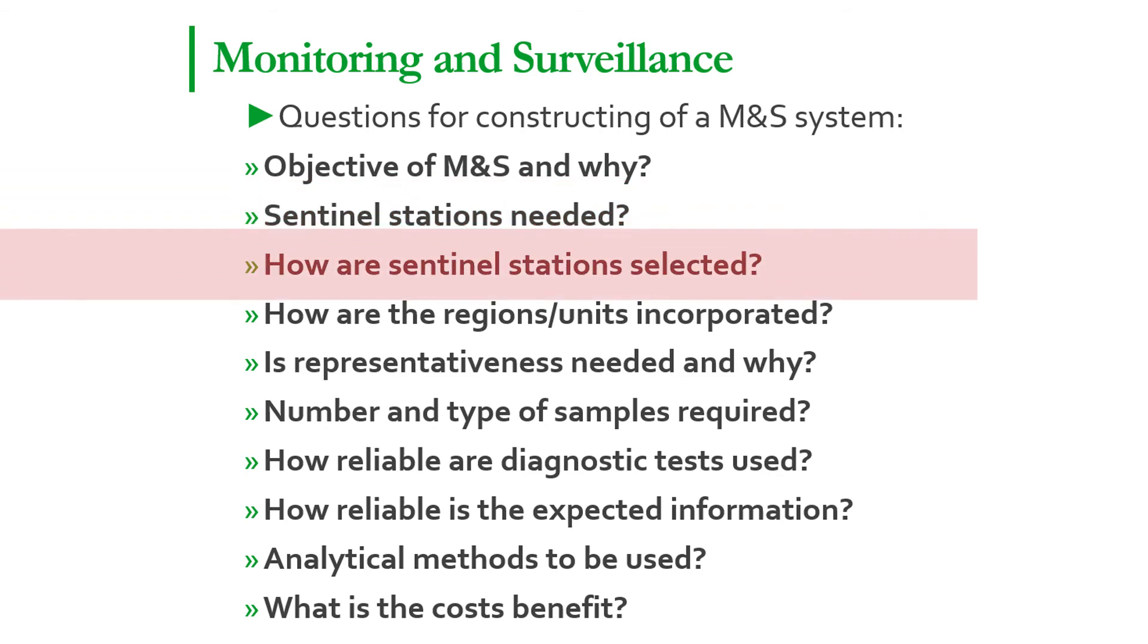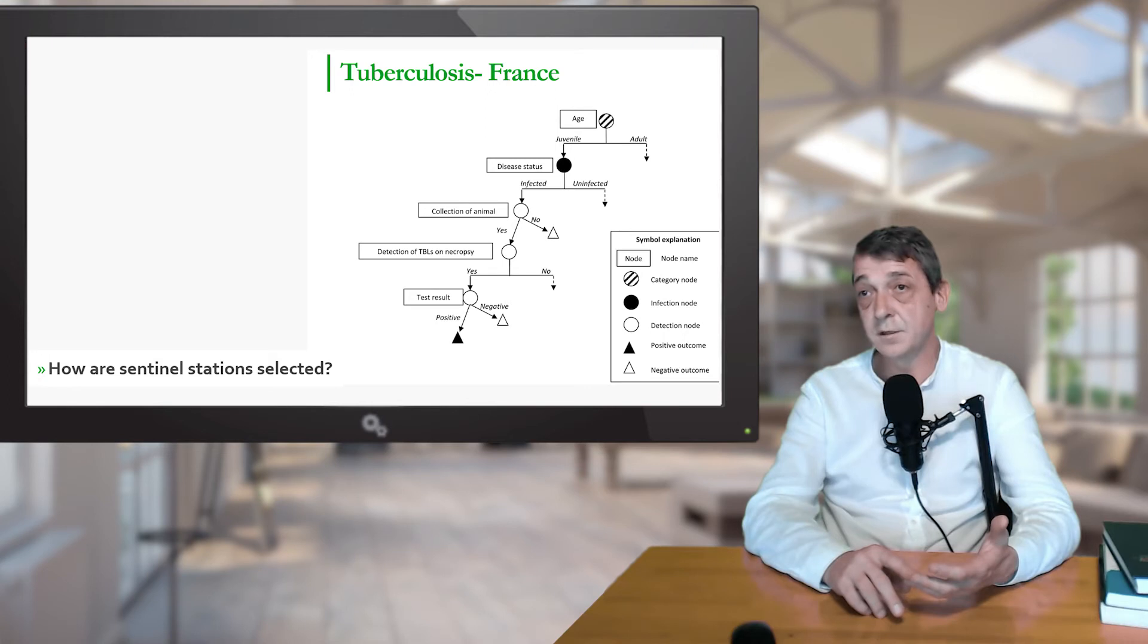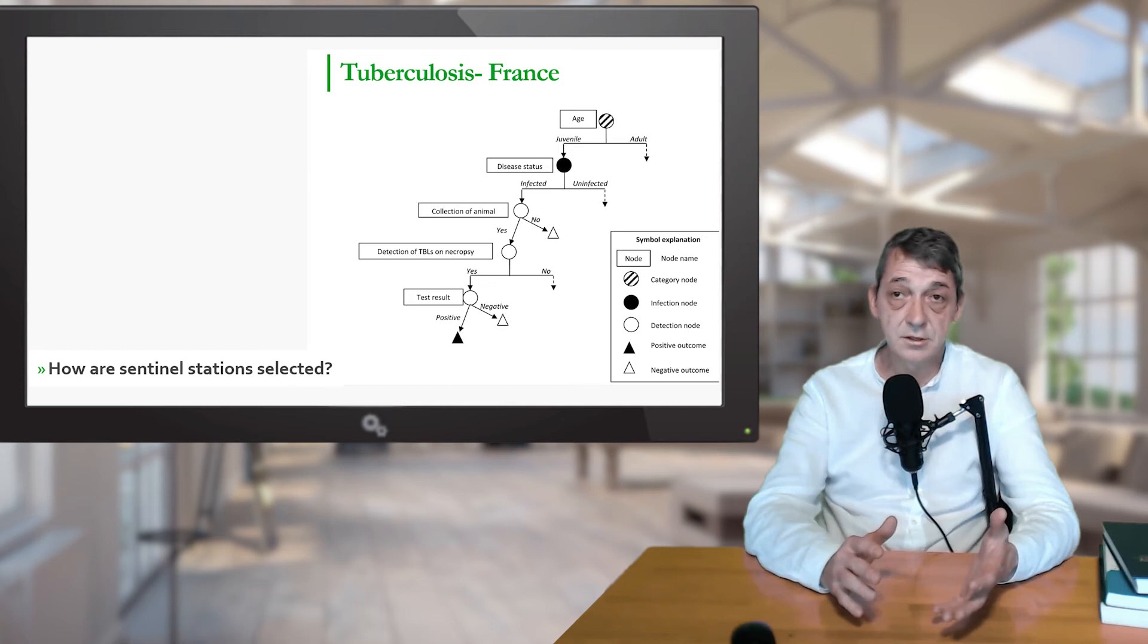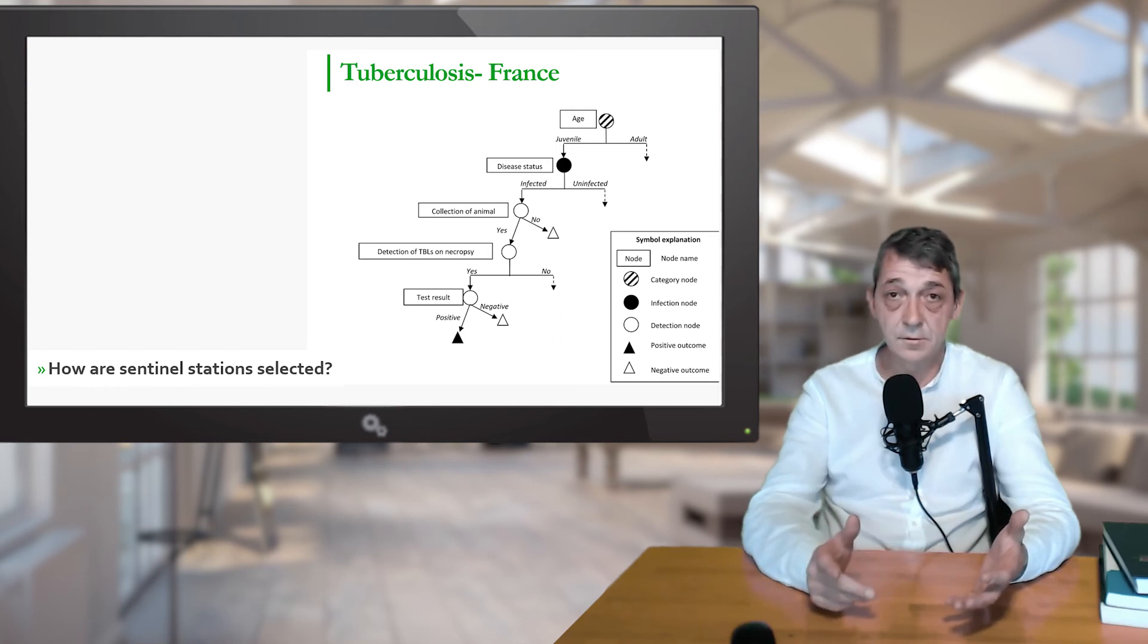The next question is: how are those stations selected? They can be selected based on disease-specific criteria. For example, we don't need a laboratory for tuberculosis. Then it's more country-specific and depends on the organization of the veterinary services. Those stations might be selected with a public tender, with direct contact, and so on.